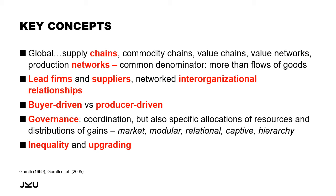Relationships can be relational, meaning buyers and suppliers are very much codependent, or they can be captive, meaning a supplier is highly dependent on a buyer because there are multiple other suppliers — as in the garment industry — that can produce the same product. The final concept is upgrading, which relates to the recognition that power in global supply chains is very unequally distributed. Upgrading refers to strategies used by firms, but also by countries and regions, to really try to improve their position in the global economy.